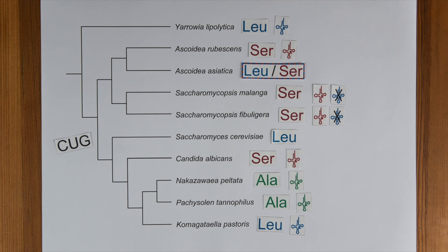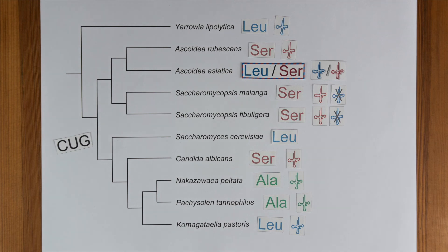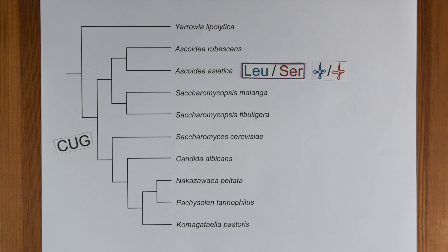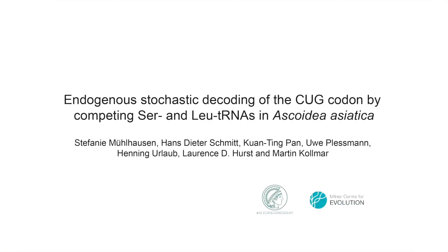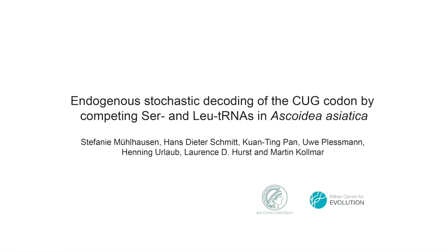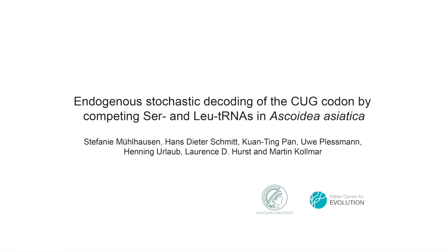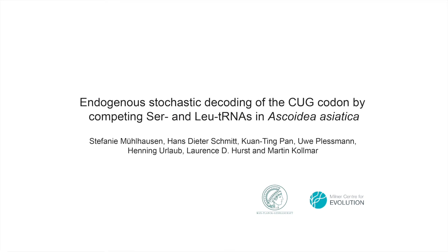Ascoidea asiatica is even more remarkable. It encodes two active CTG-decoding tRNAs. These are competing and thus causing the ambiguous translation. Ascoidea asiatica is the first species where the non-ambiguity rule of the genetic code is broken. The details of this fascinating story and how Ascoidea copes with its random proteome are described in our publication.